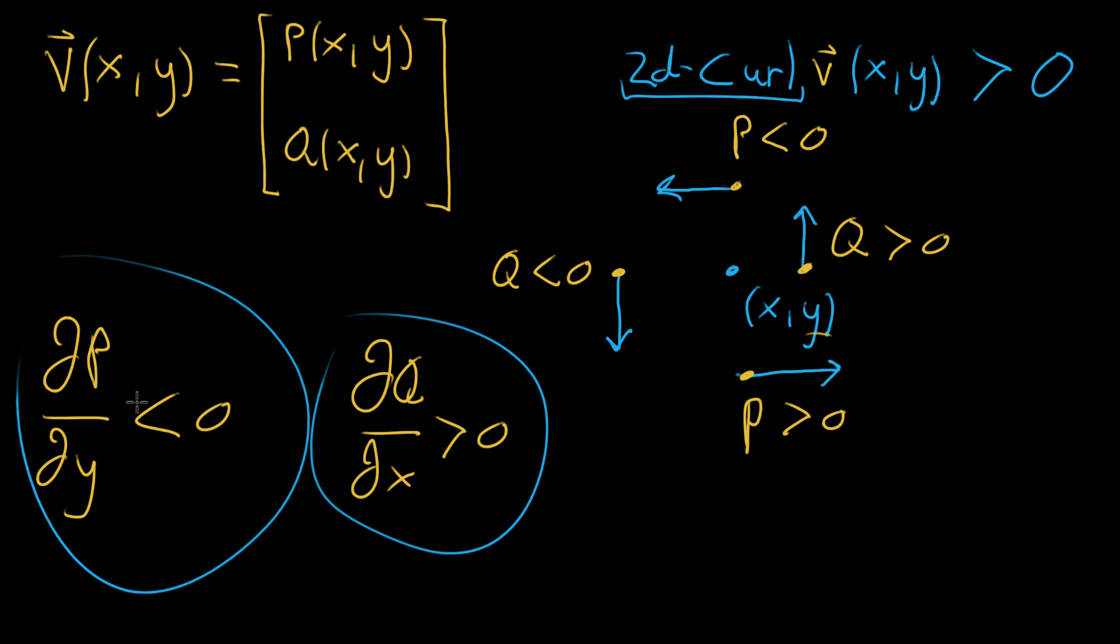And in fact, it turns out these guys tell us all you need to know. We can say, as a formula, that the two-D curl of our vector field V as a function of X and Y is equal to the partial derivative of Q with respect to X, and then I'm gonna subtract off the partial of P with respect to Y. Because I want, when this is negative, for that to correspond with more positive two-D curl. So I'm gonna subtract off partial of P with respect to Y.